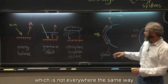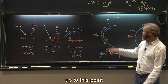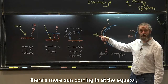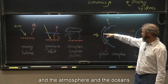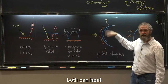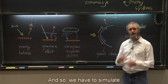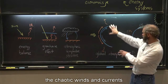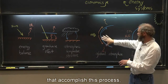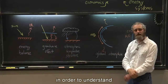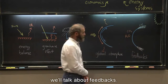Then we'll put this into the context of the global climate system, which is not everywhere the same. There's more sun coming in at the equator than at the poles, and the atmosphere and the ocean both carry heat from the equator toward the poles. So we have to simulate all the weather — the chaotic winds and currents — that accomplish this process in order to understand how the climate system works.